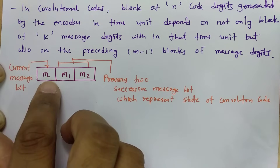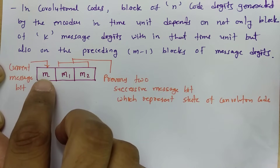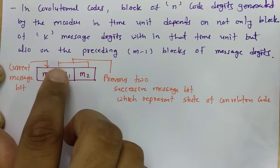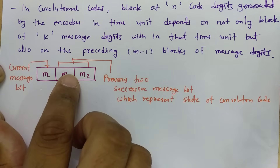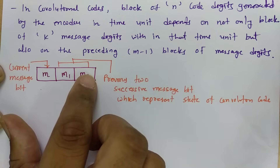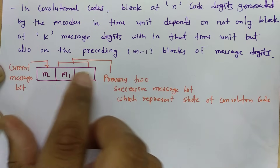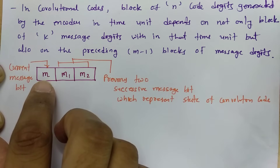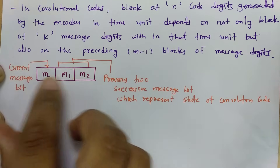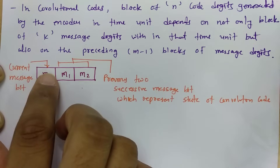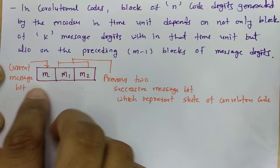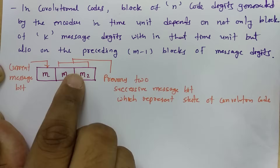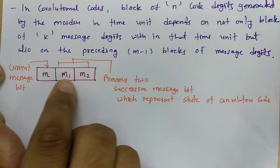Now if I enter bit 1, then m becomes 1, the previous zero shifts to m1, and the previous 1 shifts to m2 — and the old m2 gets discarded. So now the state becomes m=1, m1=0, m2=1. As you enter bits, they shift through, with the first bit showing the current message bit and the two remaining bits showing the previous message bits, representing the state of the convolution code.